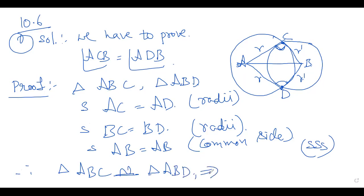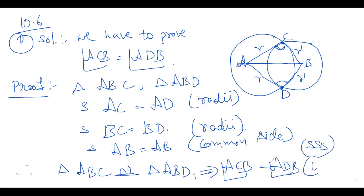We have proved three elements are equal. So we can write directly: angle ACB is equal to angle ADB, by corresponding parts of congruent triangles — CPCT. That's it children.